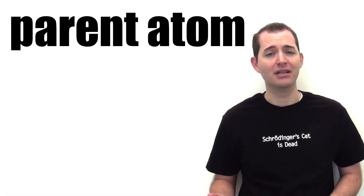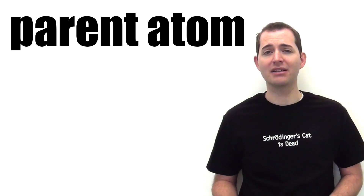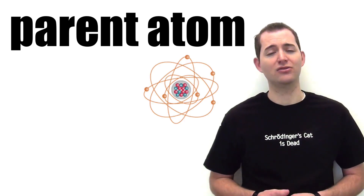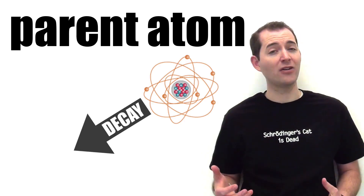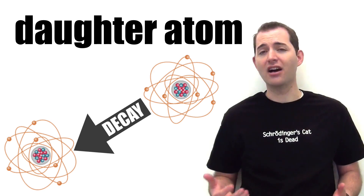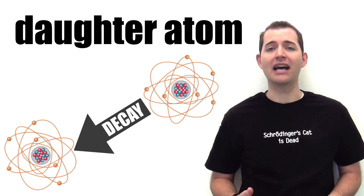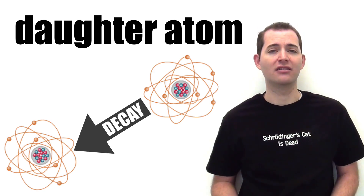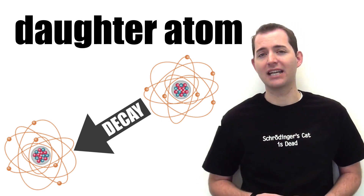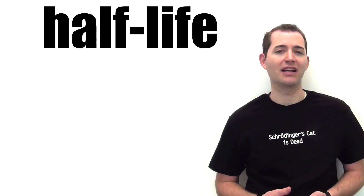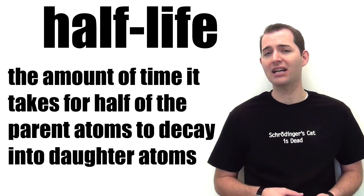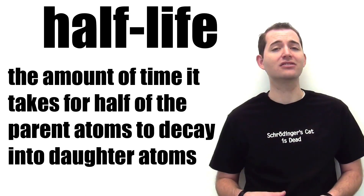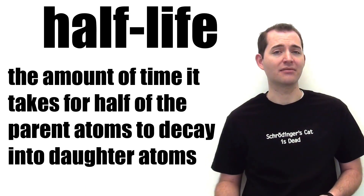Next is a parent atom. A parent atom is the atom before it undergoes radioactive decay, which is followed by a daughter atom. A daughter atom is the atom after it has already undergone radioactive decay. Our final important term is a half-life, which is the amount of time it takes for half of the parent atoms to decay into daughter atoms.